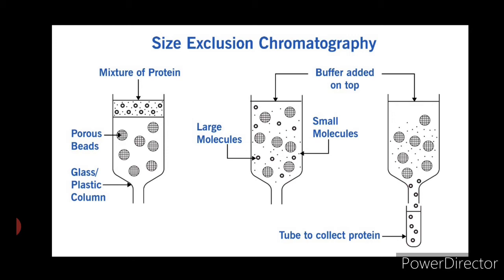The protein sample in a small volume is applied to the top of a column of porous beads that are made up of an insoluble but highly hydrated polymer such as polyacrylamide, or carbohydrates such as dextran or agarose.